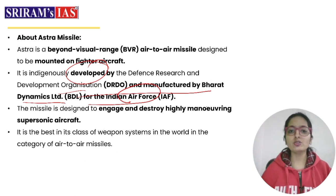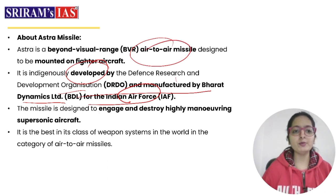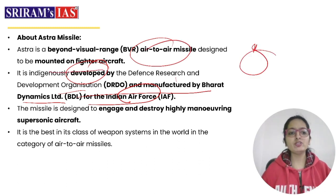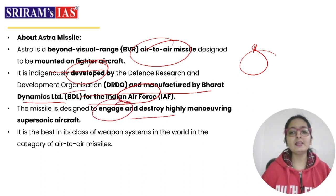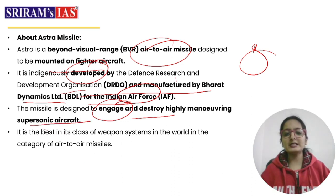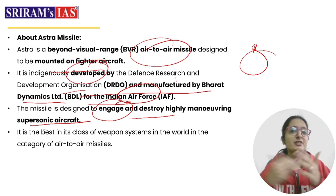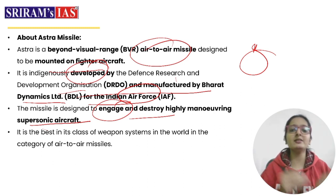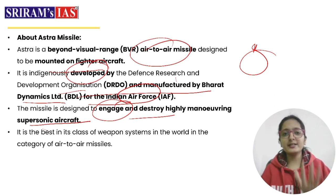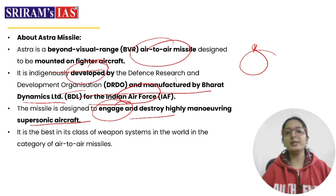Astra is an air-to-air missile designed to be mounted on fighter aircraft. It is designed to engage and destroy highly maneuvering supersonic aircraft — in other words, it is built to shoot down fast and agile planes that may be very difficult to target otherwise. It is especially good at destroying high-speed planes, and among air-to-air missiles, Astra is considered one of the best in the world.